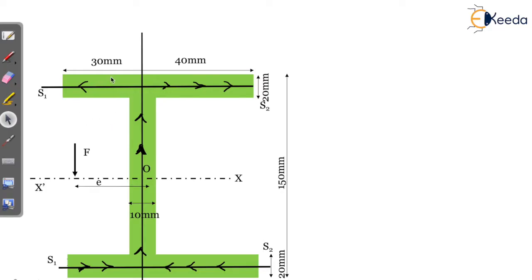S1 is a shear force produced by the external applied shear force F on one part of the flange. Because of this external load, this shear force is produced. S2 is the shear force produced on the other part of the flange.